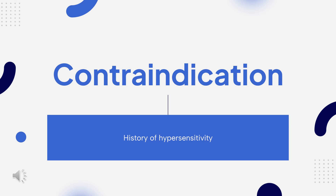Contraindication: Ranitidine has been discontinued globally, according to the NHS, and is contraindicated due to excess cancer risk and the ready availability of H2 antagonist and PPI alternatives.